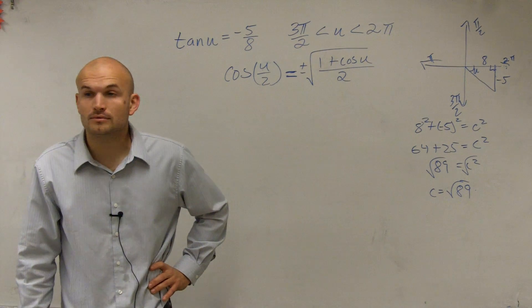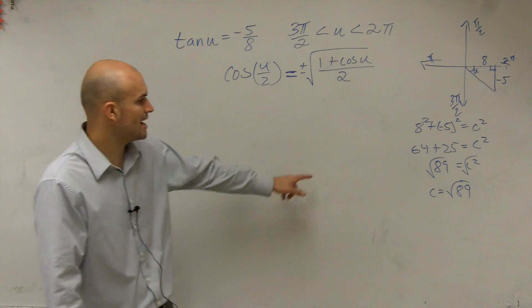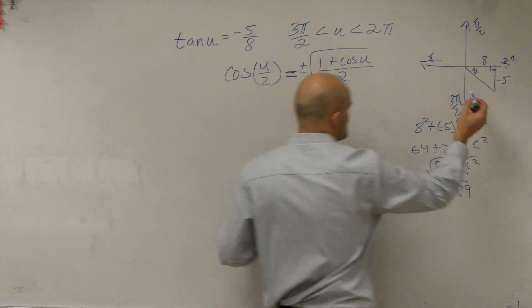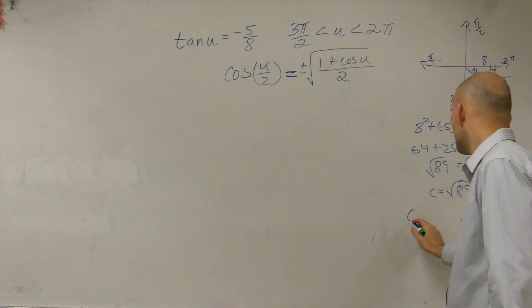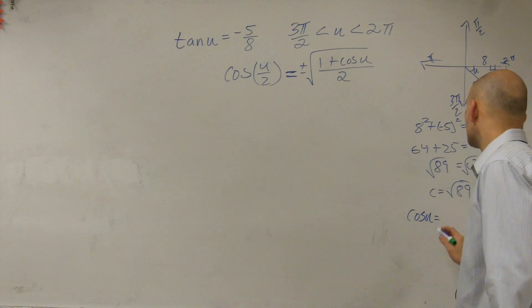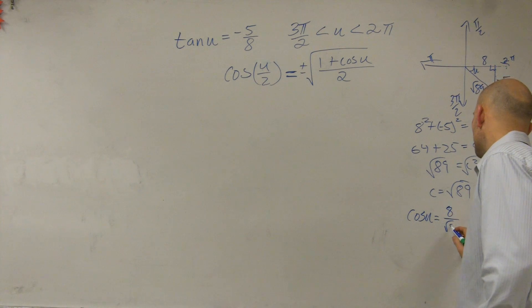So now, what we're going to do is, let's plug in what our cosine of u is. So now we can say, knowing this triangle, this point on the triangle is square root of 89. So therefore, the cosine of my angle u is equal to 8 over the square root of 89.